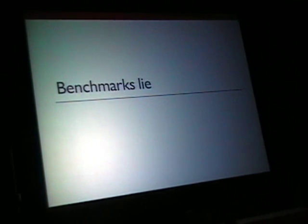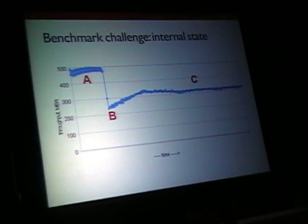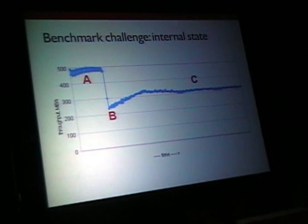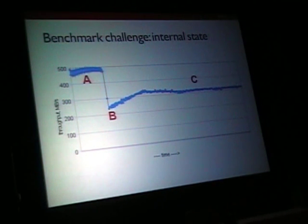Now let's move to the benchmark side. We all know benchmarks can be misleading, but Flash brings this to a totally new level. When you benchmark a Flash card you can see it has different internal states: State A, when it shows best performance; State C, when the garbage collector is working; and State B, the typical state. The bad news is you usually have no idea what current state your card is in. Flash vendors tend to publish numbers from State A, which look good but don't tell the full story.